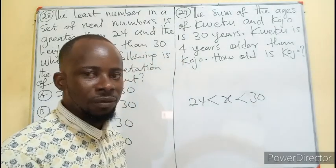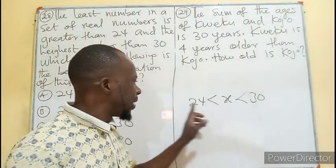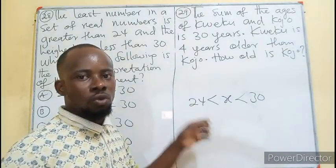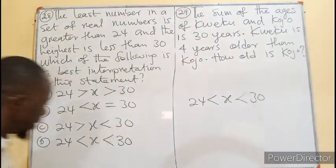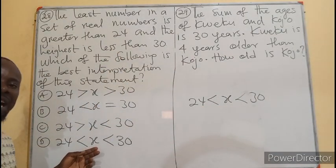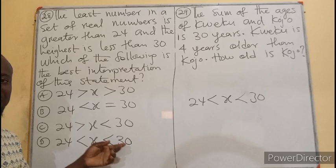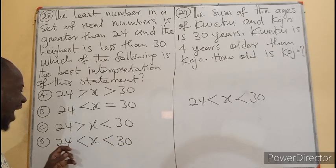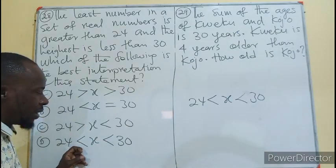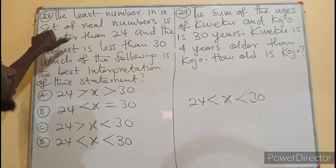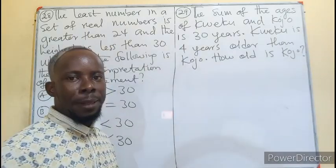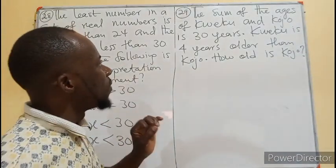30 is not inclusive, and 24 is not inclusive. Which of these options fits this? 24 is less than x, and x is less than 30. So all the numbers after 24 up to before 30 are the set of those real numbers.